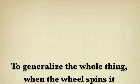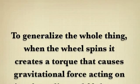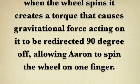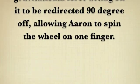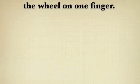To generalize the whole thing, when the wheel spins, it creates a torque that causes gravitational force acting on it to be redirected 90 degrees off, allowing Aaron to spin the wheel on one finger.